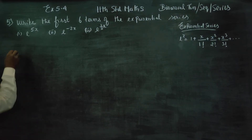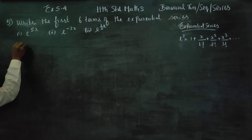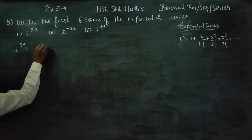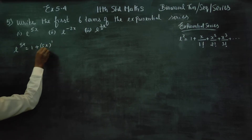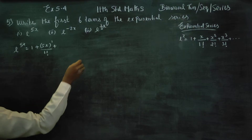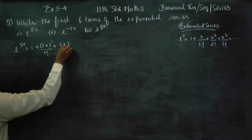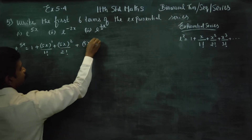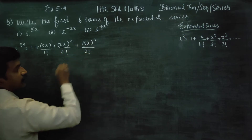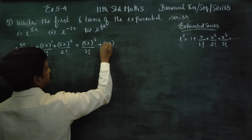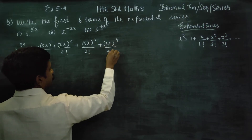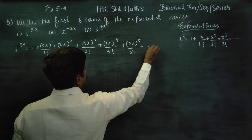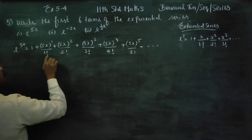Now we are entering into our first sum. Our first sum is e power 5x. We will expand it: 1 plus 5x whole power 1 by 1 factorial plus 5x whole square by 2 factorial plus 5x whole cube by 3 factorial, plus 5x whole power 4 by 4 factorial, plus 5x whole power 5 by 5 factorial, and it goes on. They are asking only 6 terms.